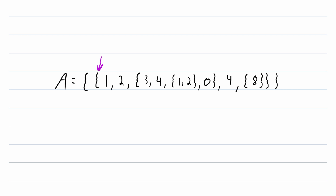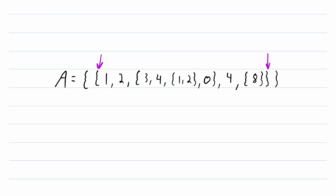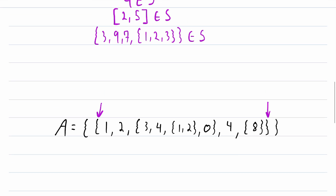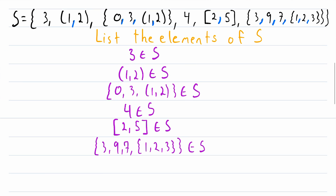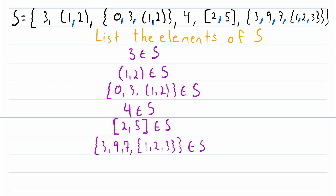When working through an example like this, your fingers can be a very useful way to keep track of the number of brackets or braces that need to be closed. For every bracket, brace, or parenthesis that gets opened, count up one on your fingers; for every one that gets closed, count down one. Once you get back down to zero, that's when you know the element has ended. So I hope this video has helped you understand how to identify the elements of a set.